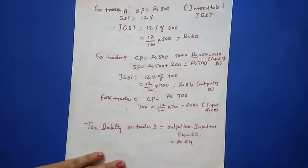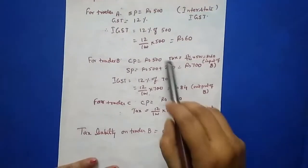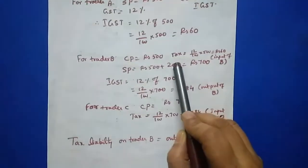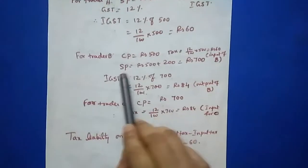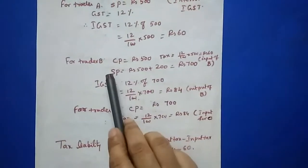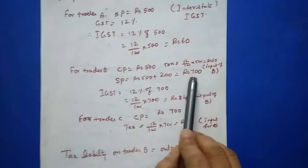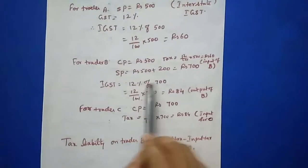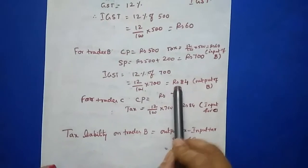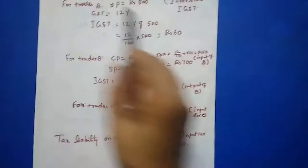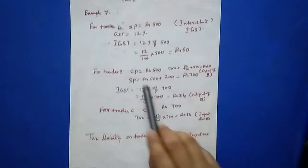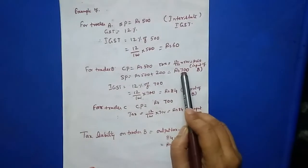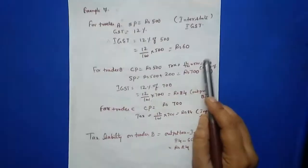The tax he is paying is 60 rupees. For SP, you should not add the tax. Directly from CP you add 200 rupees, so the SP of Trader B is 700 rupees. Now IGST is 12% of 700 = 84 rupees. He is paying 60 rupees to Trader A and collecting 84 rupees from Trader C. The 60 rupees is the input tax and the 84 rupees collected is the output tax.